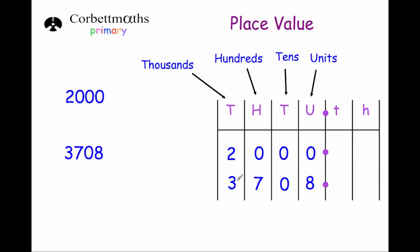So we write the 3 in the 1000s, the 7 in the 100s, a 0 in the 10s column and an 8 in the units column. This carries on — the next column is 10 thousands, the next one is 100 thousands, the next one would be millions and so on.